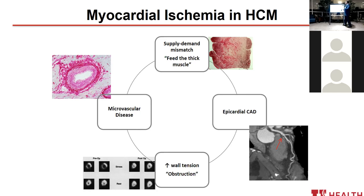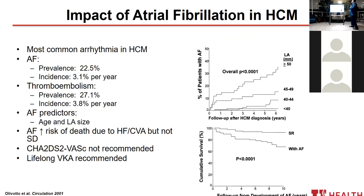Myocardial ischemia can occur in these patients. With hypertrophy, there is a supply-demand mismatch. Like any patient, they can have epicardial coronary disease. Patients with HCM also frequently have myocardial bridges. There is also ischemia related to increased wall tension in patients with obstruction. A nuclear study example shows clear ischemia on stress compared with rest in a patient with no coronary disease — after myectomy, that ischemia is gone, confirming it was related to obstruction-mediated supply-demand ischemia. They also have microvascular disease.